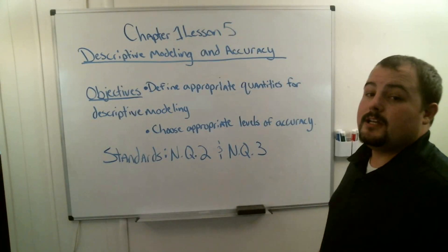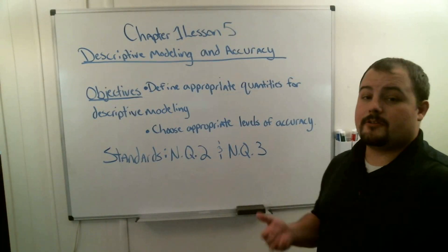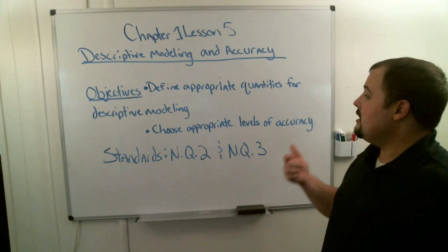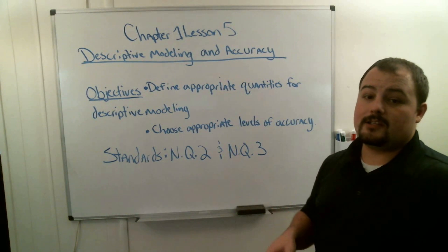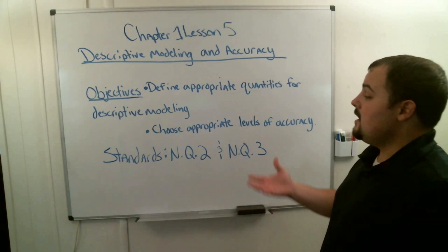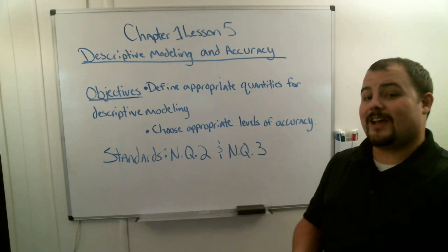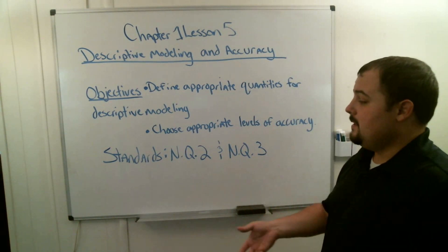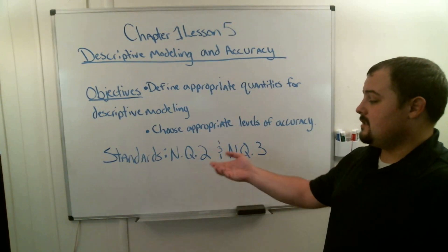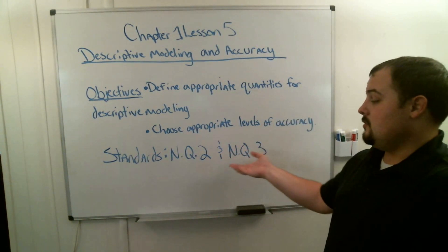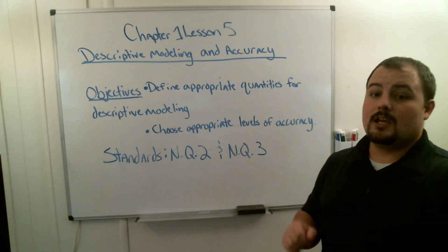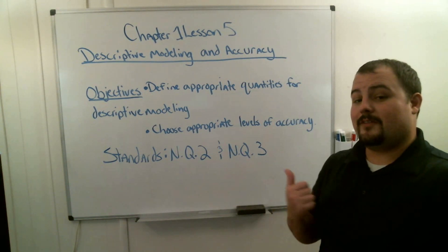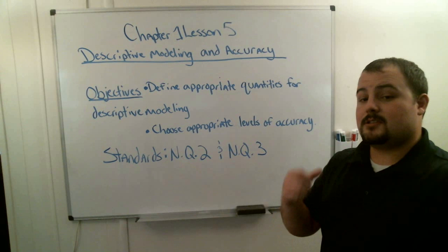Welcome to your fifth lesson. What we're going to be doing is descriptive modeling and accuracy. Our objectives are to define the appropriate quantities for descriptive modeling — what numbers are appropriate — as well as choose the appropriate levels of accuracy when solving a problem. The standards we're addressing are NQ2 and NQ3. Make sure you have everything on the slide at the top of your notes, because now we're going to get started.